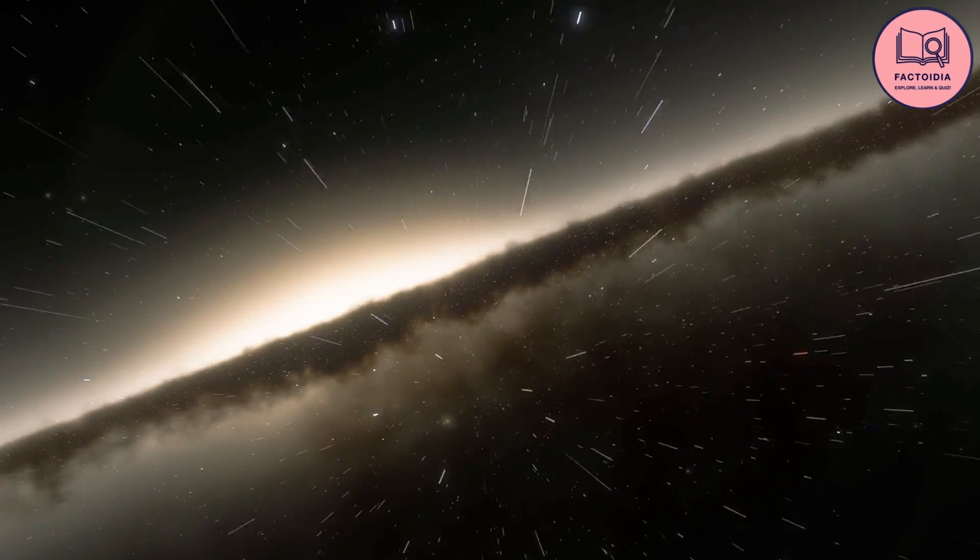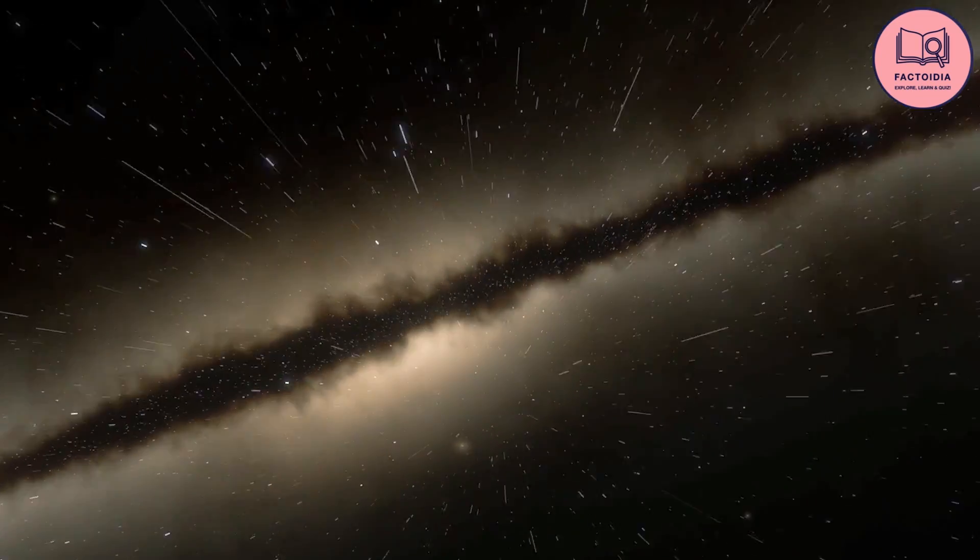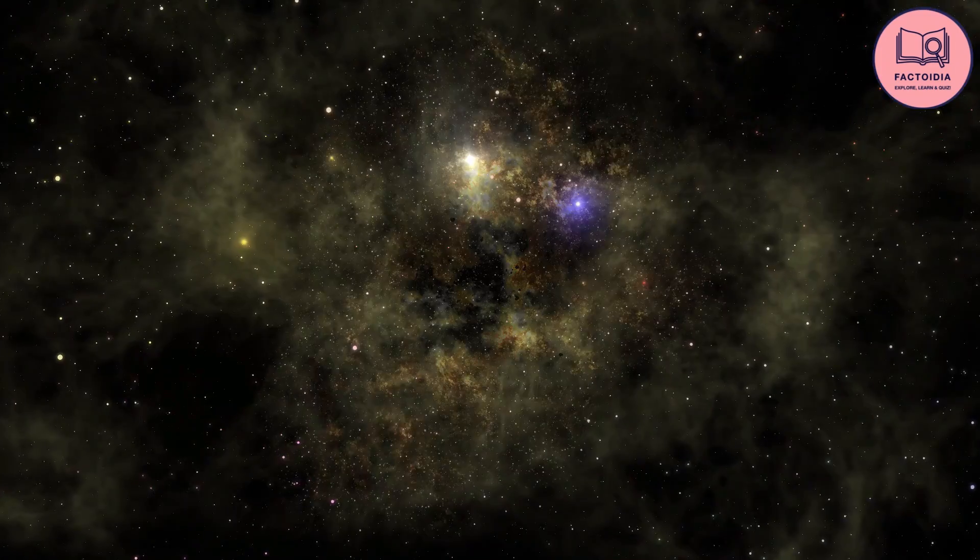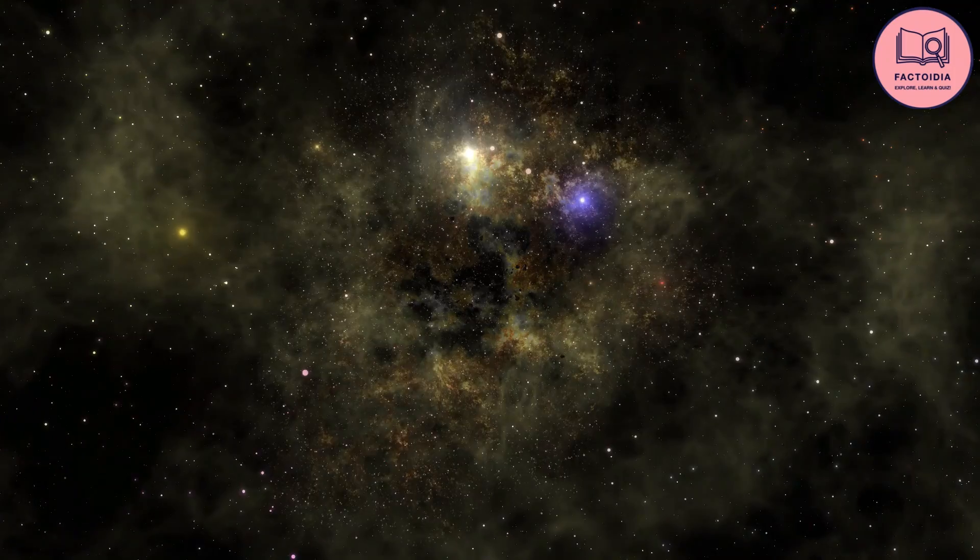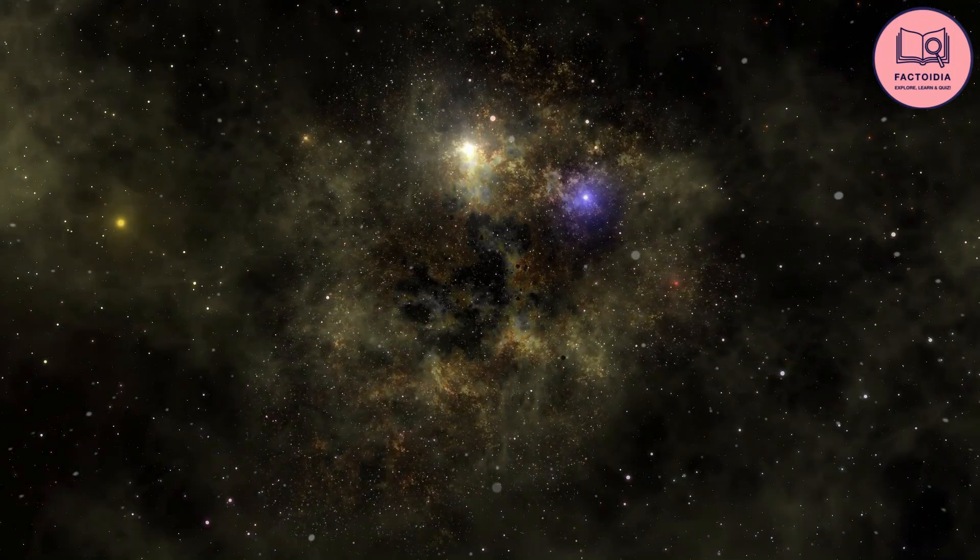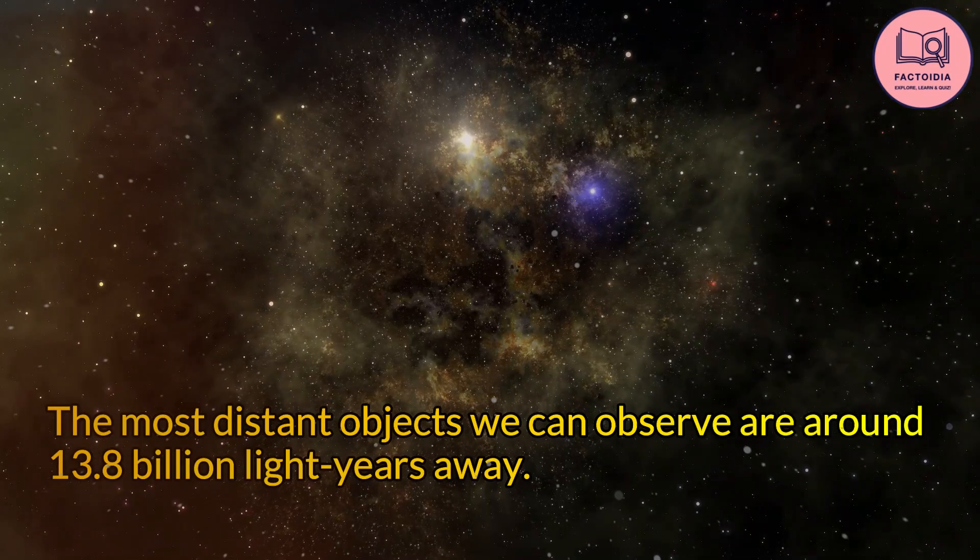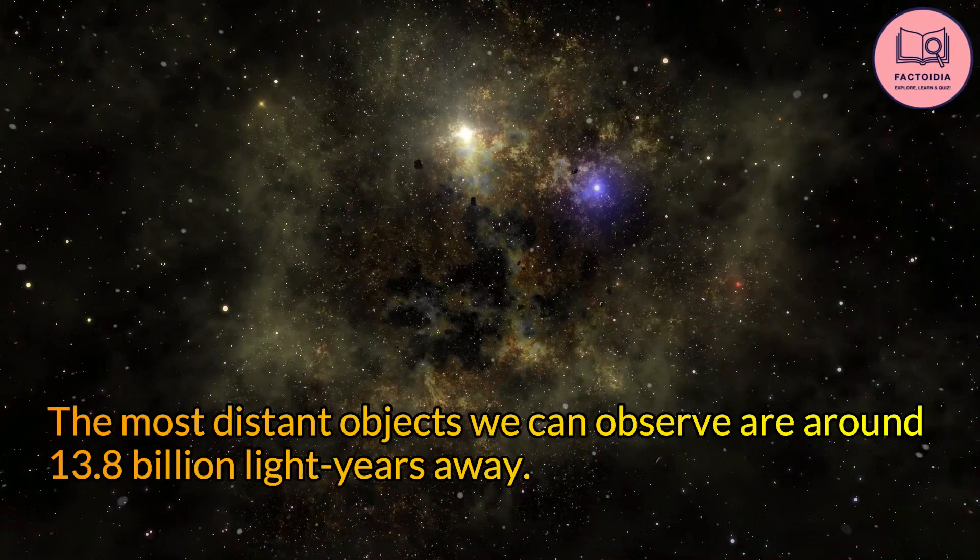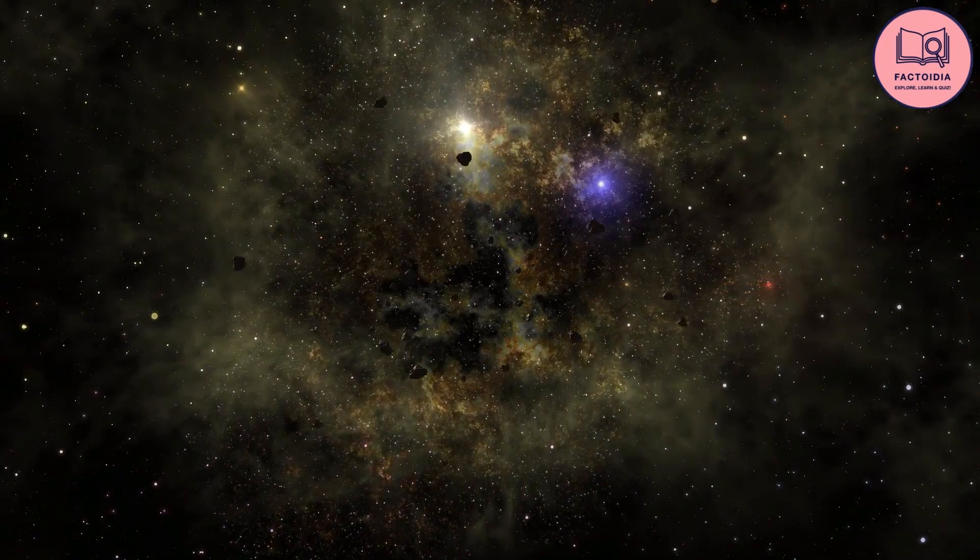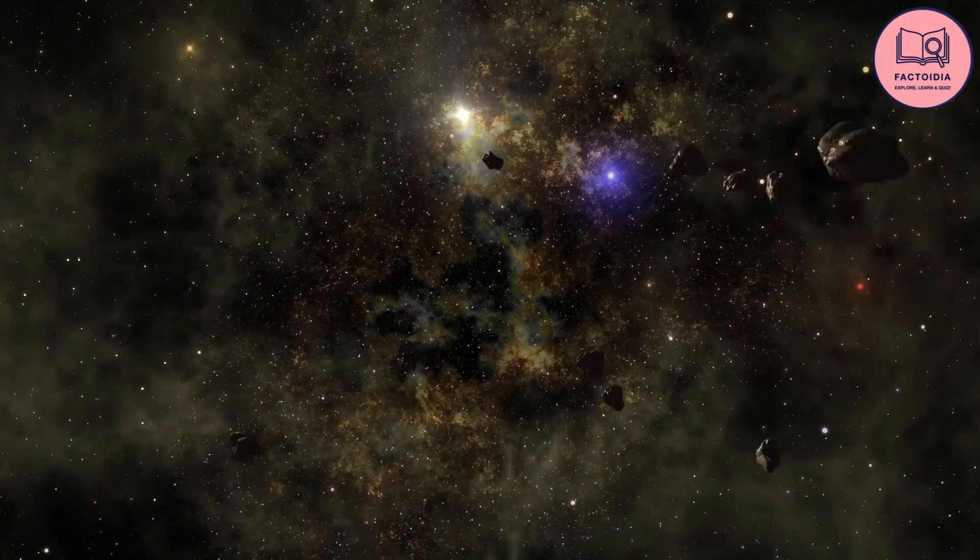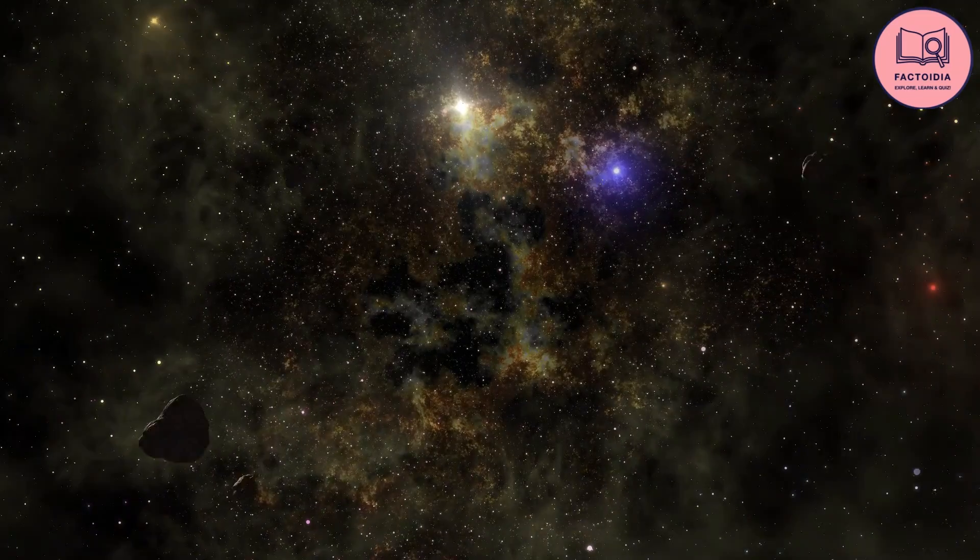The local group is just a small part of the larger Virgo supercluster, which contains thousands of galaxies. When we look out into the universe, we are seeing light that has been traveling for billions of years. The most distant objects we can observe are around 13.8 billion light-years away. That means we are seeing the universe as it was just after the Big Bang. The size and scale of the universe are truly mind-bending.